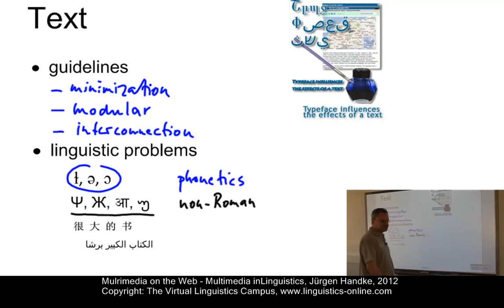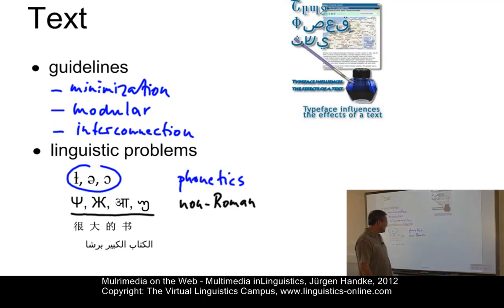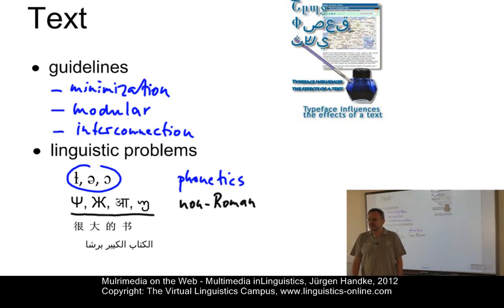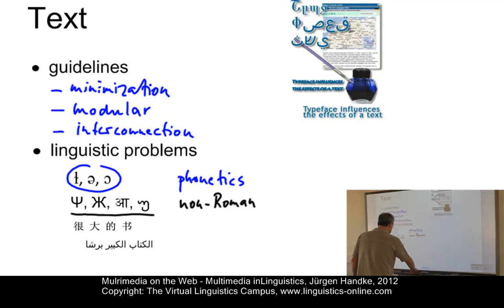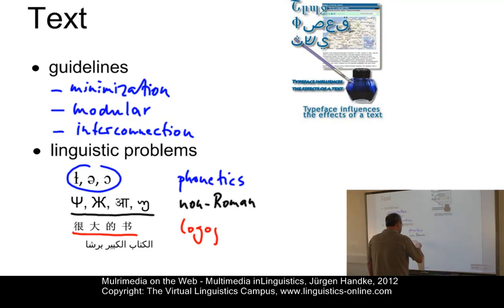Here we have examples of the Kyrillic alphabet, the Georgian alphabet, the alphabet used in Hindi, and characters used in Greek. The next set of symbols are taken from Chinese, and they are logographic.